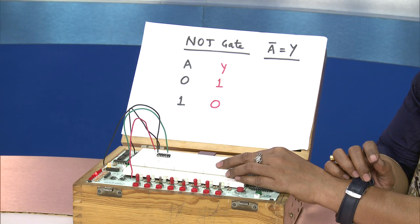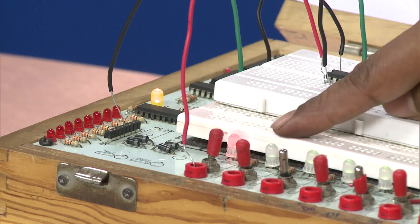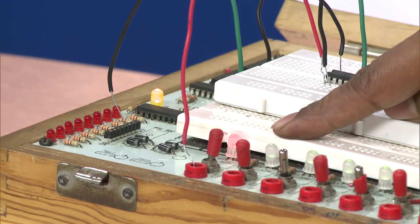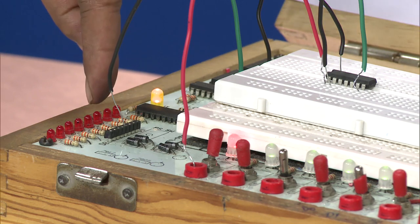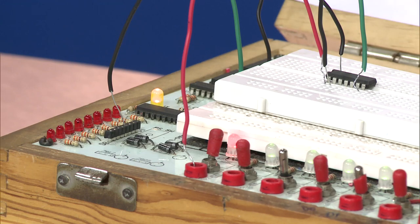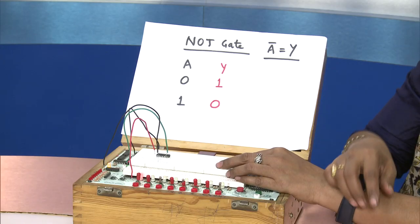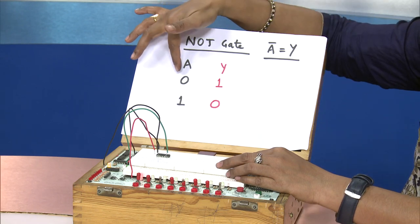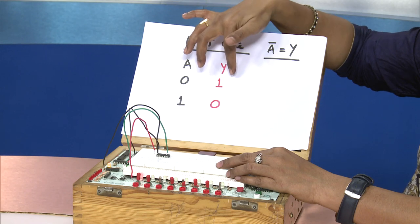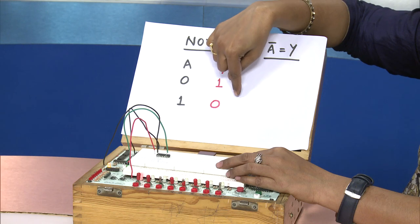If I make the input equal to 1, as soon as the LED glows, the output can be seen as going to 0. Thus in the NOT gate what we observe is that the output is always inverse of the input. In the truth table when A goes to 0, the output Y is 1, and when A goes to 1, the output Y is 0.